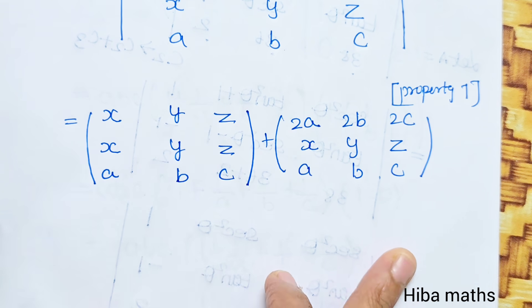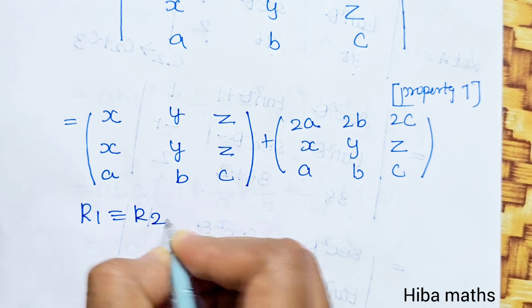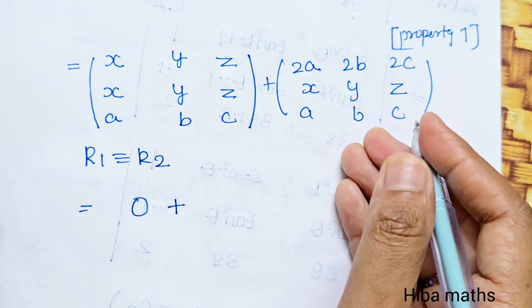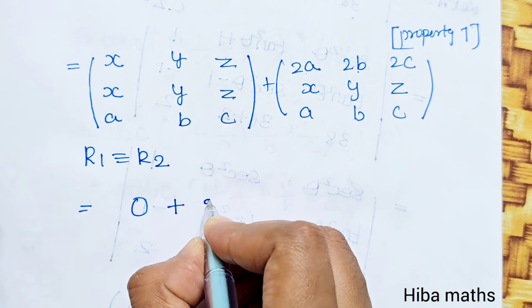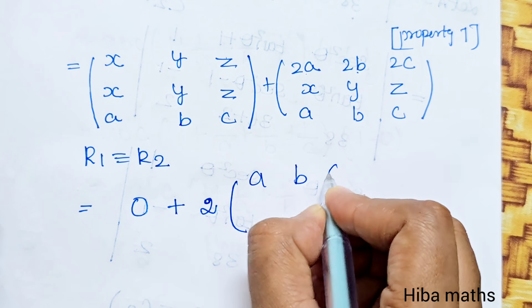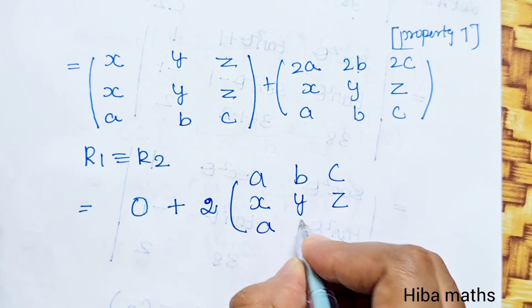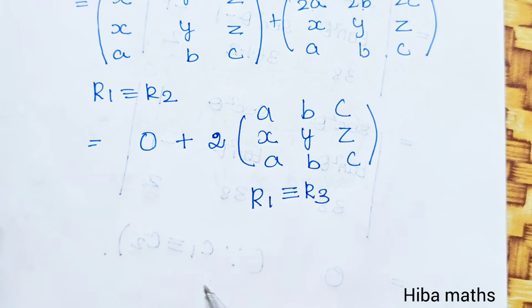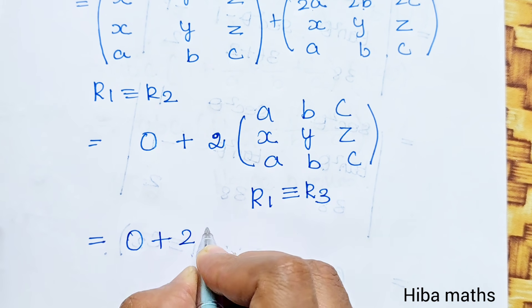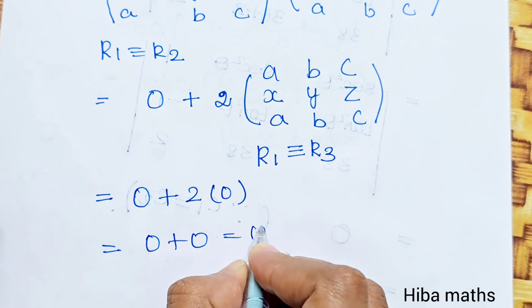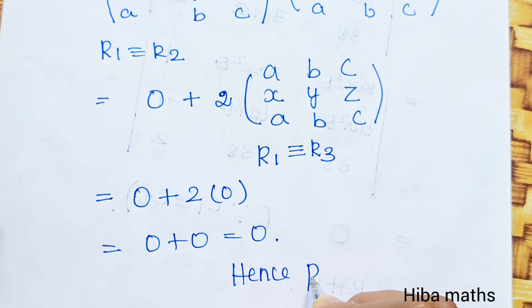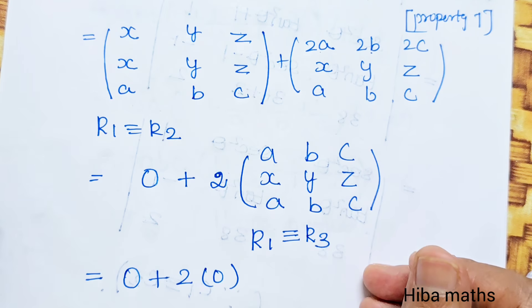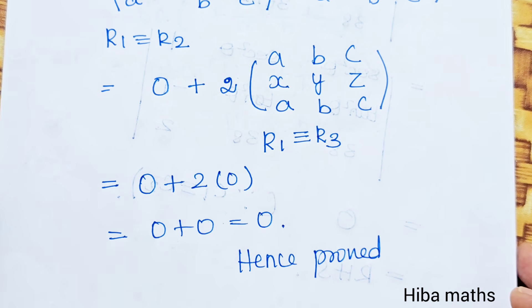In the first matrix, r1 is equal to r2, so if two rows are equal the determinant is 0. In the next matrix, the first row is 2a, 2b, 2c and third row is a, b, c — r1 equals r3. So 0 plus 2 times 0 equals 0. Hence proved. We have two equivalent rows so the result is zero.